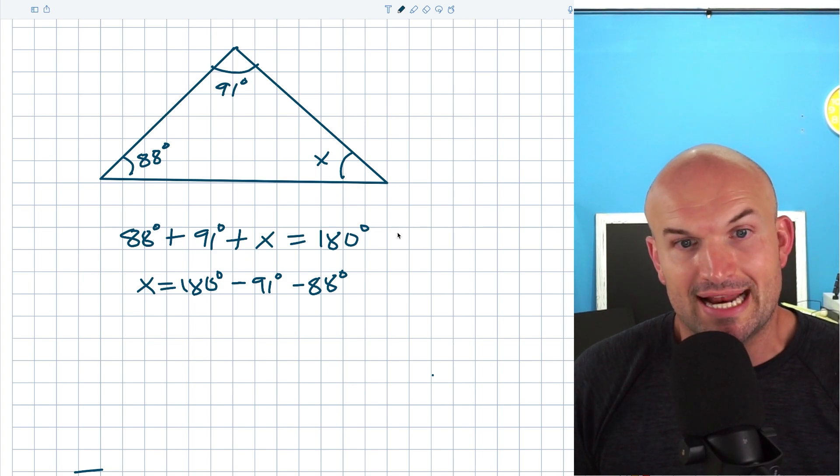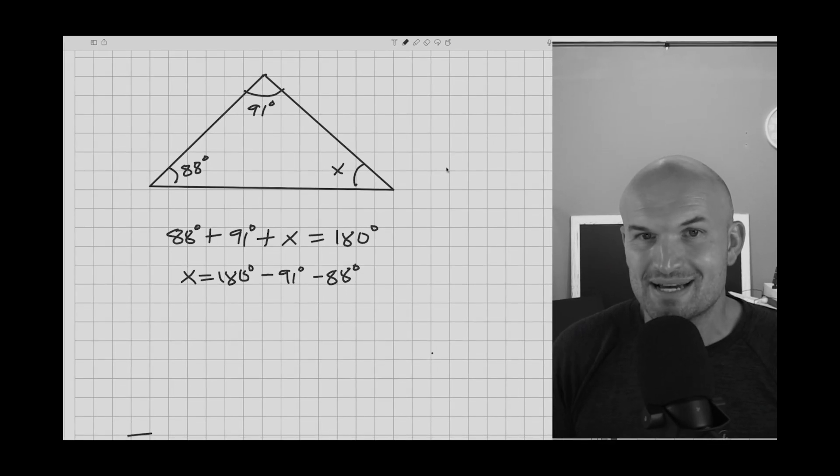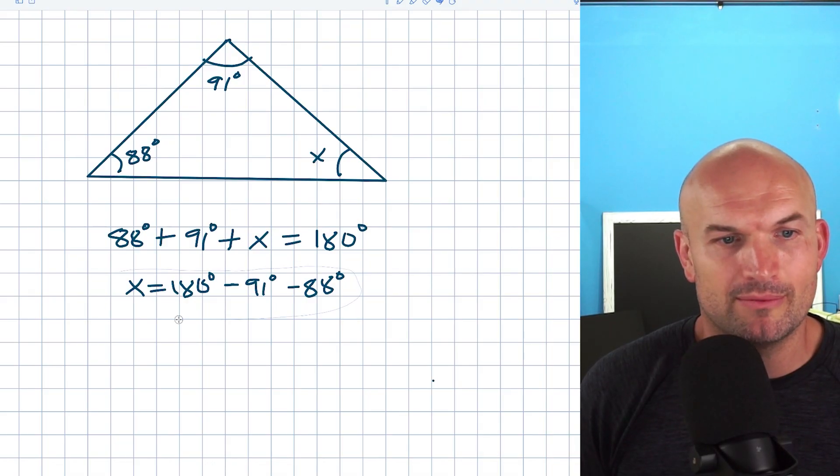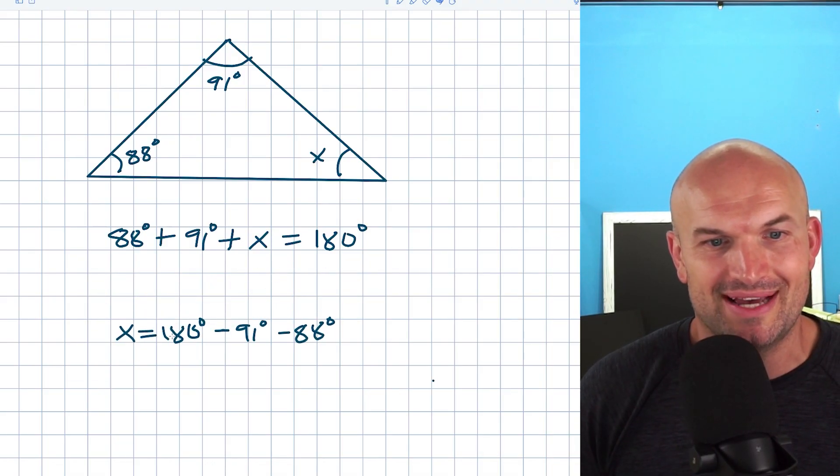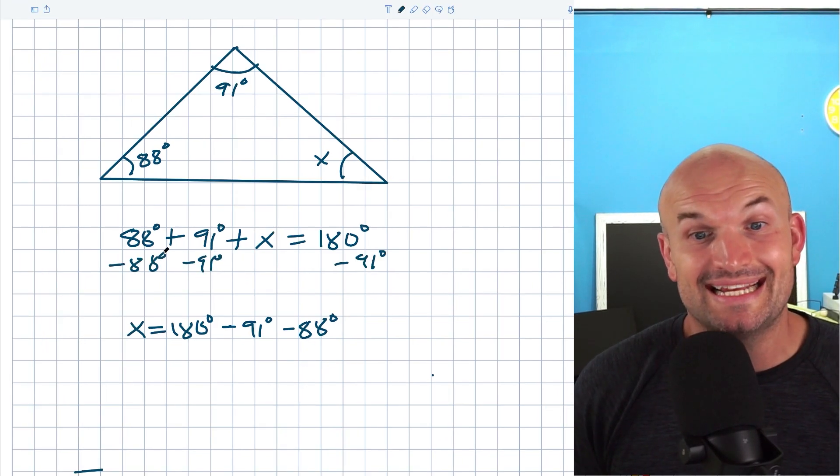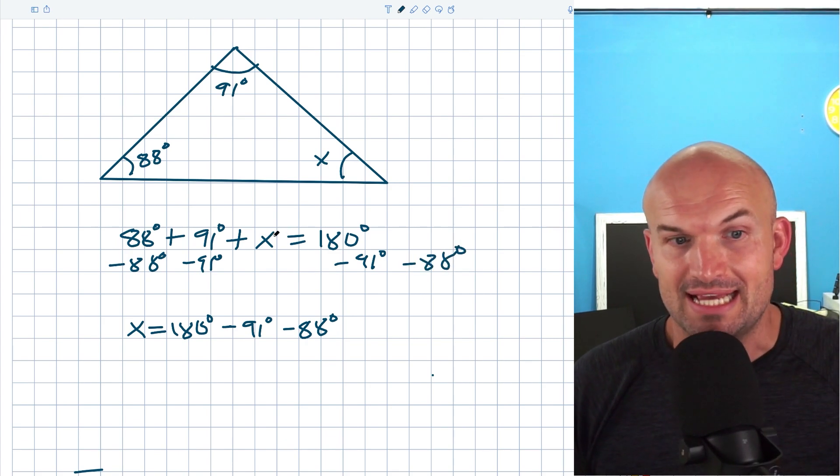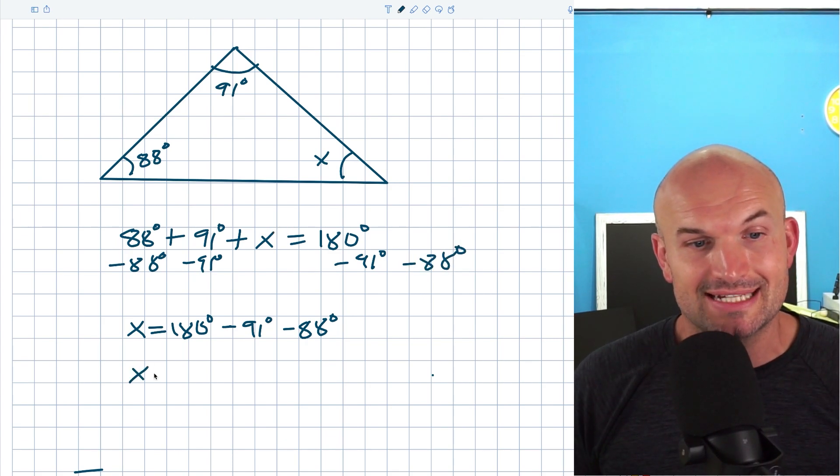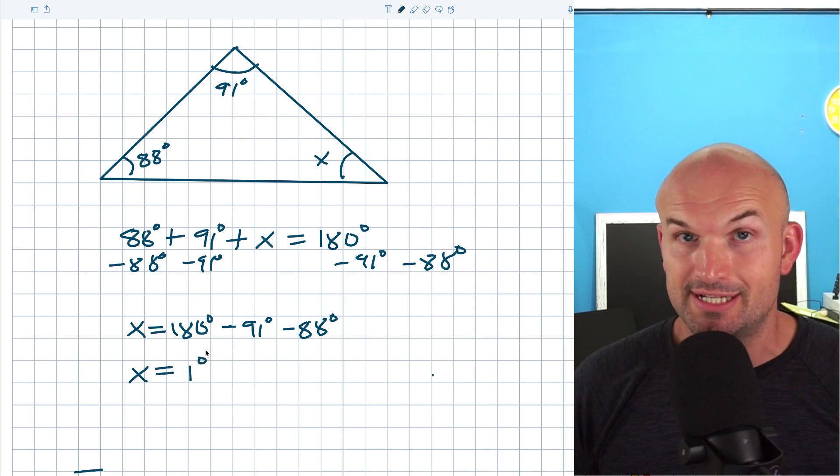Because basically what I did was I subtracted 88 on both sides and I subtracted 91 on both sides. Remember our inverse operations? Well, maybe some people don't remember the inverse operation, so let's do that real quick. I subtracted 91 degrees on both sides and 88 degrees on both sides, because you got to make sure you isolate the X. When I do that, I get X is equal to 1 degree.